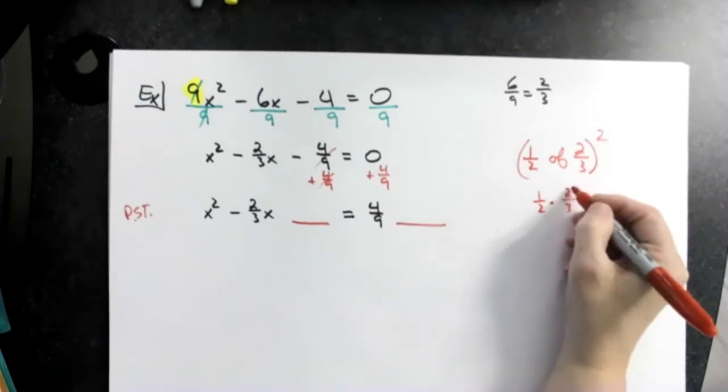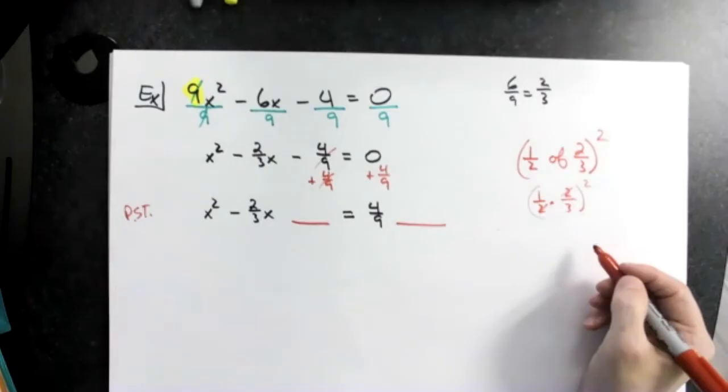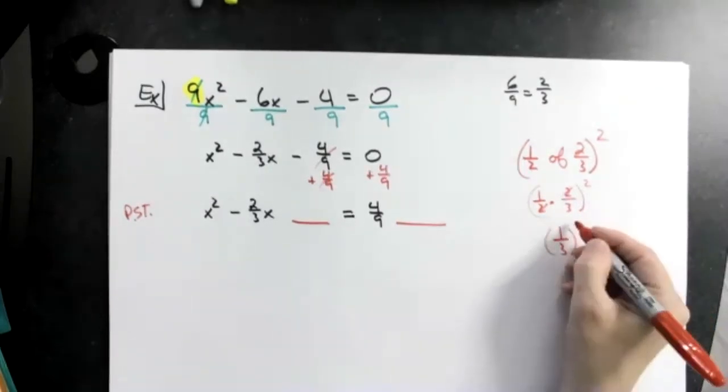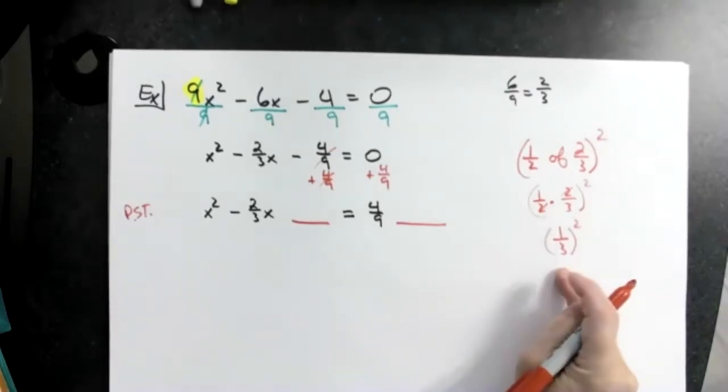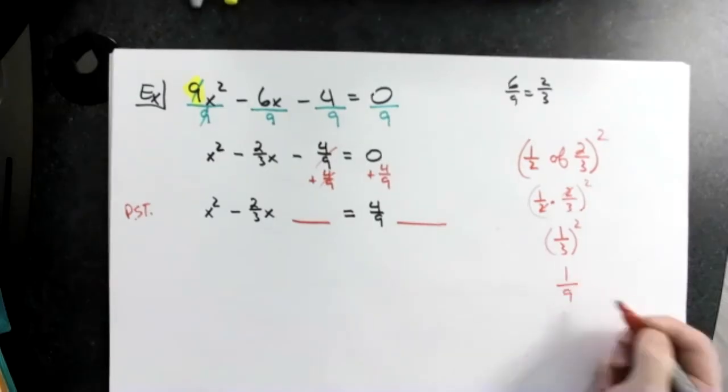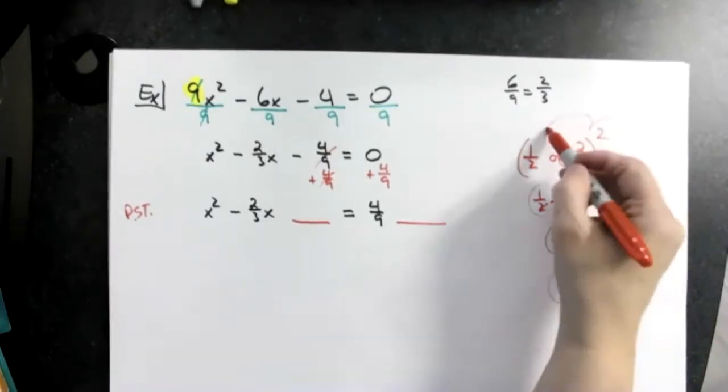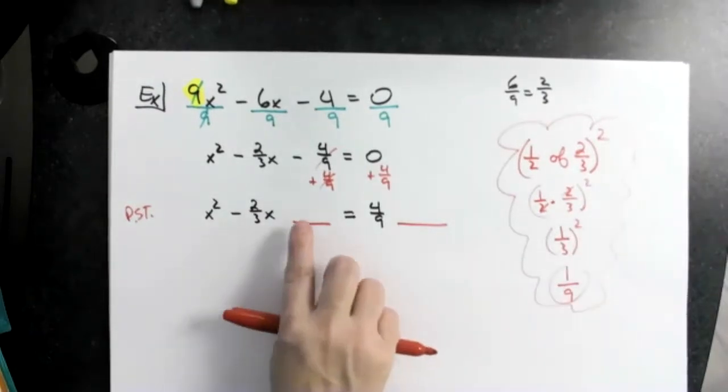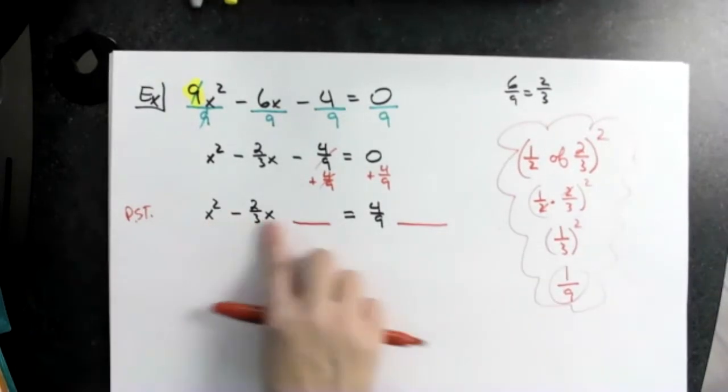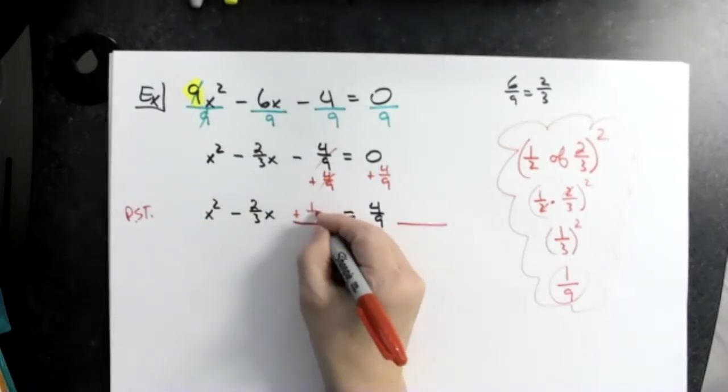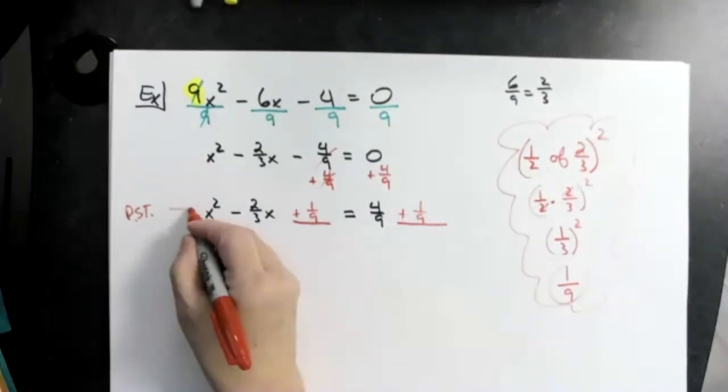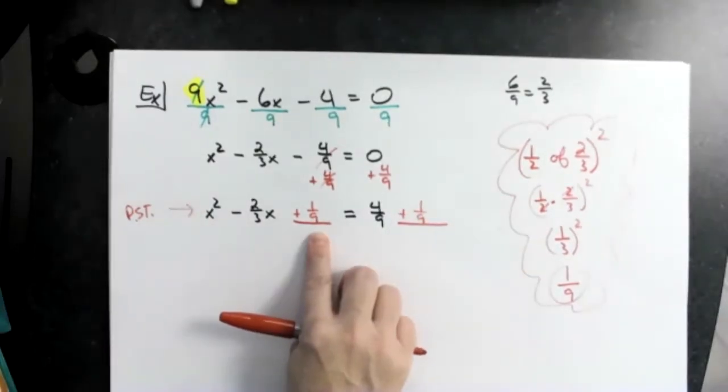One half times two-thirds is just one-third, right? Twos cross out, so one-third squared. Square the top number, square the bottom number—I'm going to have one ninth. That's the part that people don't like because it's all fractions. But my number, my magic number right here to make this a perfect square trinomial, is plus one ninth. If I do plus one ninth over here, I'm going to do plus one ninth over here. I now have a perfect square trinomial.